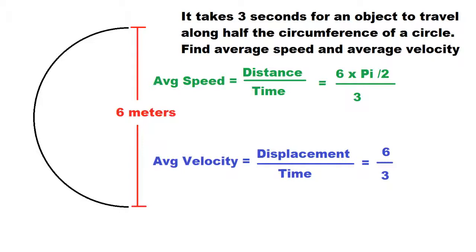So in this case, the displacement would be six meters of the diameter of the circle, and we take this over three seconds to get the average velocity.